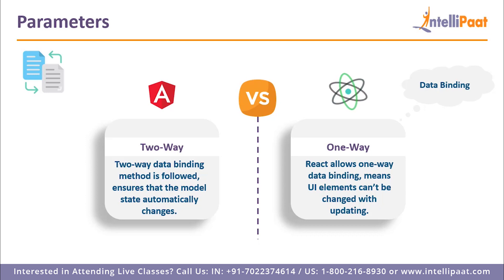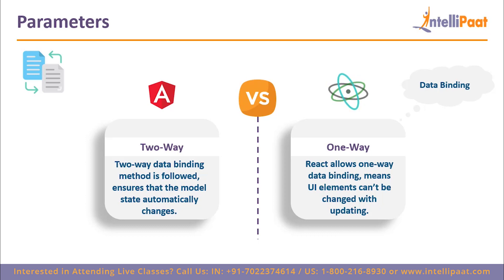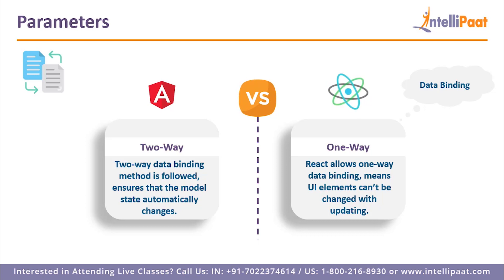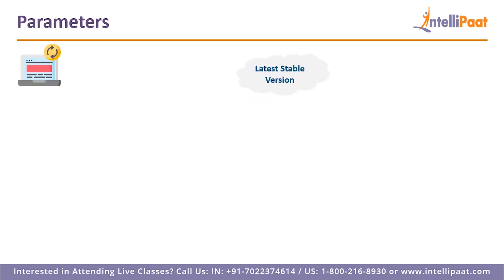React takes a completely different approach — it uses one-way data binding, only allowing changes in data to be bound to UI elements, not the reverse. This is based on the principle of one-way data flow, making your application more predictable and easier to understand, test, and debug — which is a key reason React.js is so popular. Vue.js also uses two-way data binding via the v-model directive.